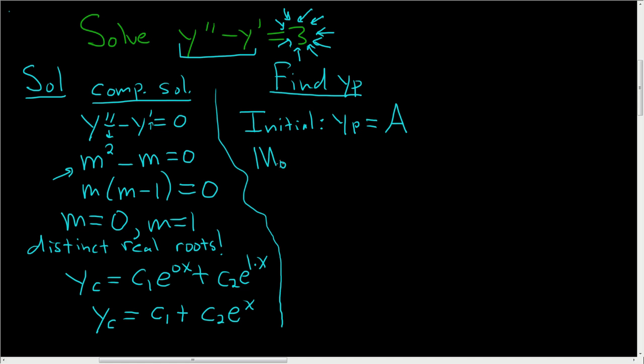Now we'll find the modified version. So what is the modified version? Well, to find the modified version, you look at yp, and you look way down here on the left at yc, and you ask yourself, is there any repetition between the terms of yp and the terms of yc?